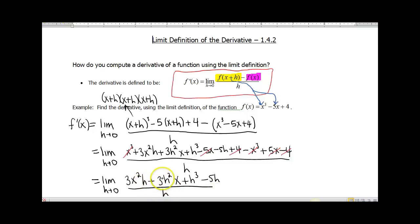Hopefully you notice now in our four terms that are left in the numerator, they all have an h in common. So let's go ahead and factor that out. We have h(3x² + 3hx + h² - 5) divided by h.